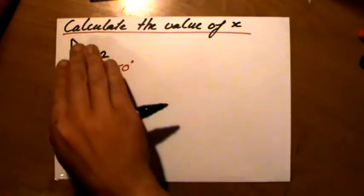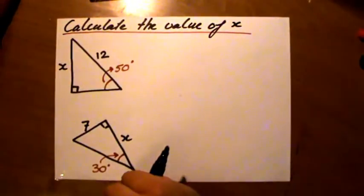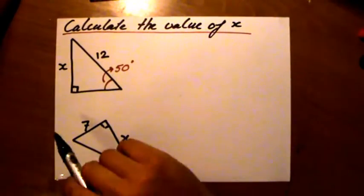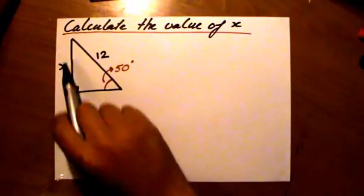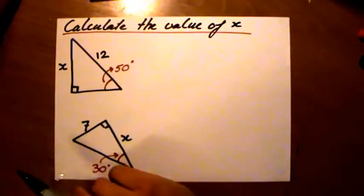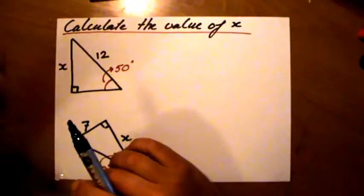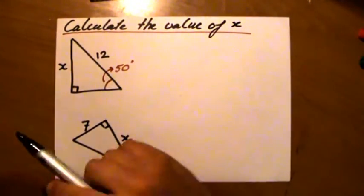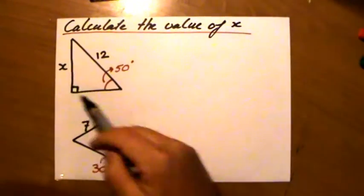The question states to calculate the value of x. Looking at the situation, x is a side, a length in a right-angled triangle. Immediately I start thinking about Pythagoras' theorem because we can calculate lengths in right-angled triangles.